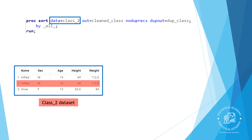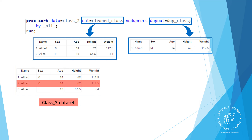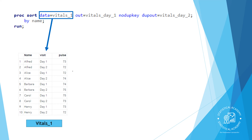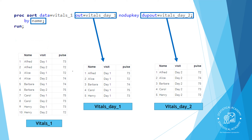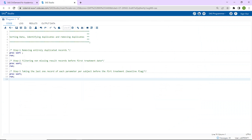In an example using NODUPREX, the input data set class2 has two observations for Alfred that contain identical information. The output data set cleaner_class has only one of the duplicate observations, and the output data set dupe_class has the observation that was removed. Another option available in PROC SORT is NODUPKEY, which is helpful when you want to identify duplicated values for particular variables. When you add NODUPKEY, only the first occurrence of each unique value of the variables listed in the BY statement is kept in the output data set.